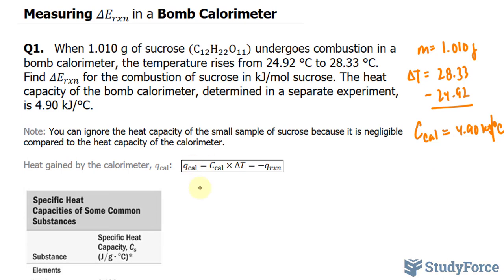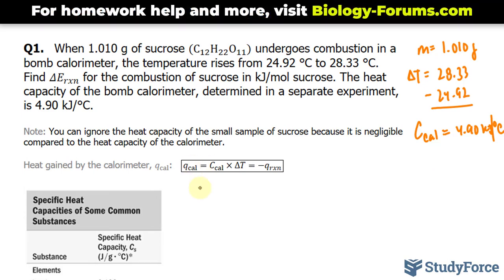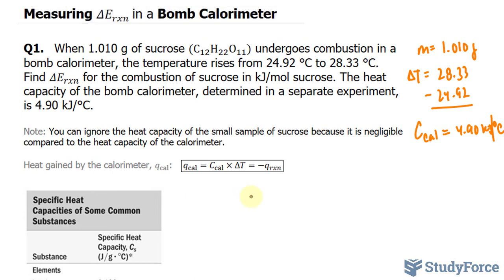This will give us Q cal. With Q cal, we can use that to find delta E. Because the formula for delta E is equal to the heat of the reaction, which we'll represent as QRXN, over per mole of the sucrose molecule. N represents mole of sucrose. Let's go ahead and figure this out.